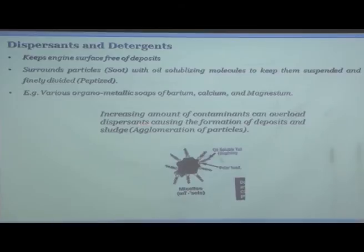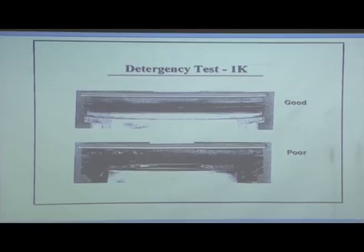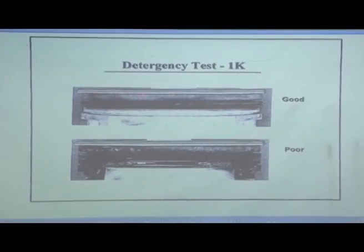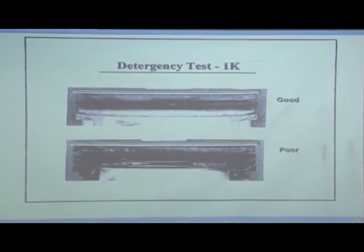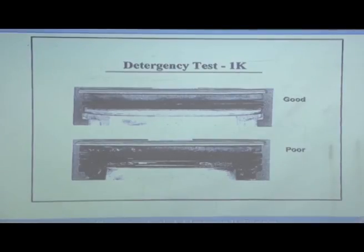Increasing amounts of contaminants can overload the dispersants, causing formation of deposits and sludge in the engine. Once lubricating oils are formulated, engine tests are performed to see how they work. Results show piston rings and piston tops — good detergency means hardly any carbon deposit; poor detergency results in heavy carbon deposits. Lubricating oils once formulated have to undergo very extensive engine testing before they are marketable.